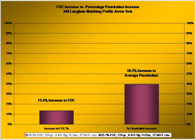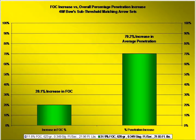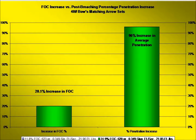This graph is for all shots from the 40-pound bow. We're seeing an increase of 20.1% in FOC, which gives us a 70.2% increase in penetration. Now this includes shots that did not breach the bone. If we look at a different graph and take only the six bone-breaching shots in each group, for that 20.1% increase we have a 96% increase in penetration.